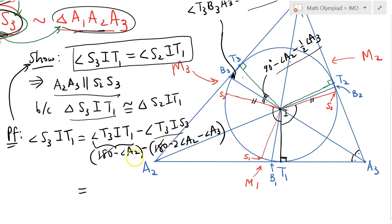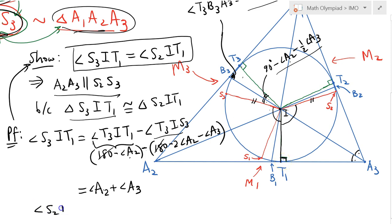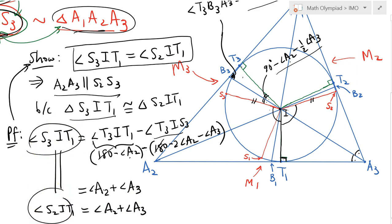So angle S3 I T1 equals (180 − A2) − (180 − 2·A2 − A3). The 180s cancel, giving A2 + A3. By symmetry, angle S2 I T1 is also equal to A2 + A3. Therefore these two angles are congruent, which establishes that triangles S3 I T1 and S2 I T1 are congruent.